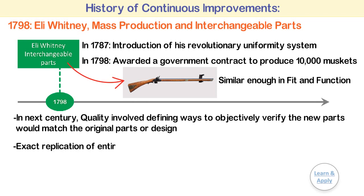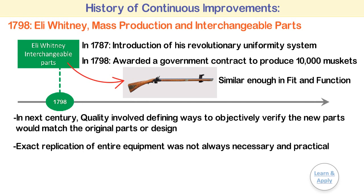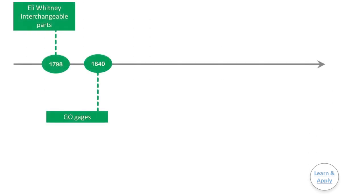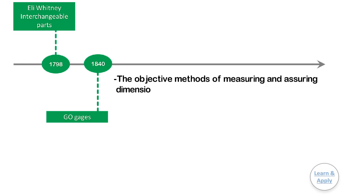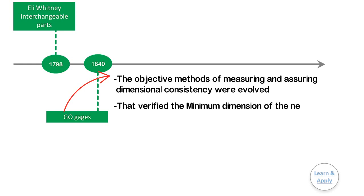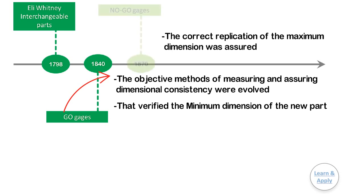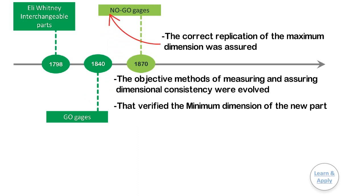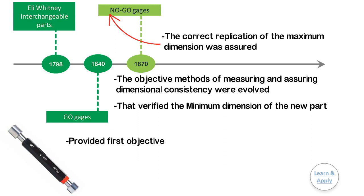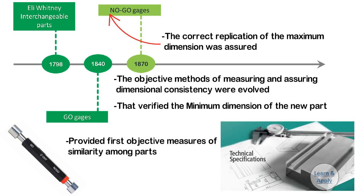Exact replication was not always necessary, practical, cost-effective, or measurable. In the mid-1800s, objective methods of measuring and assuring dimensional consistency were evolved. This was due to the introduction and use of GO gauges that verified the minimum dimension of a new part. The correct replication of the maximum dimension was assured by using NO-GO gauges, introduced about 30 years later. Minimum and maximum tolerance limits, as measured by the use of these gauges, provided some of the first objective measures of similarity among parts. These measures eventually evolved into specifications.